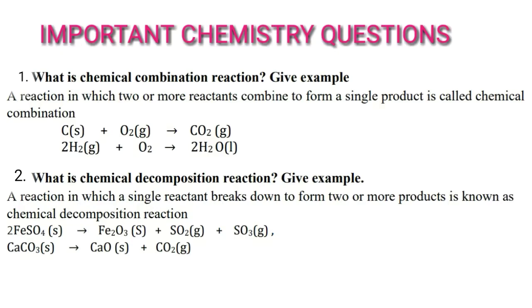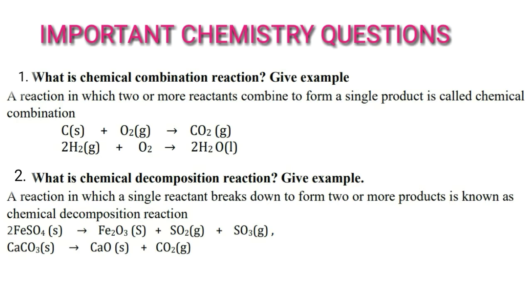Hi dear students. In this video let us learn a few important questions of chemistry. First question: what is a chemical combination reaction? Give an example. Chemical combination is a reaction in which two or more reactants combine to form a single product. Formula: A + B gives rise to AB. For example, carbon plus oxygen gives rise to CO₂.